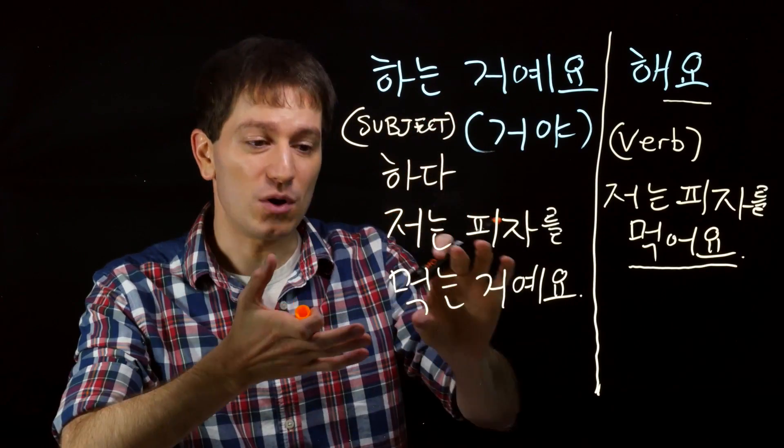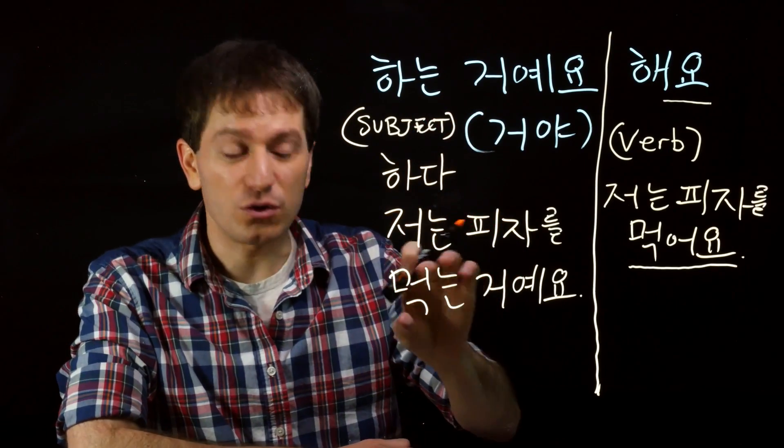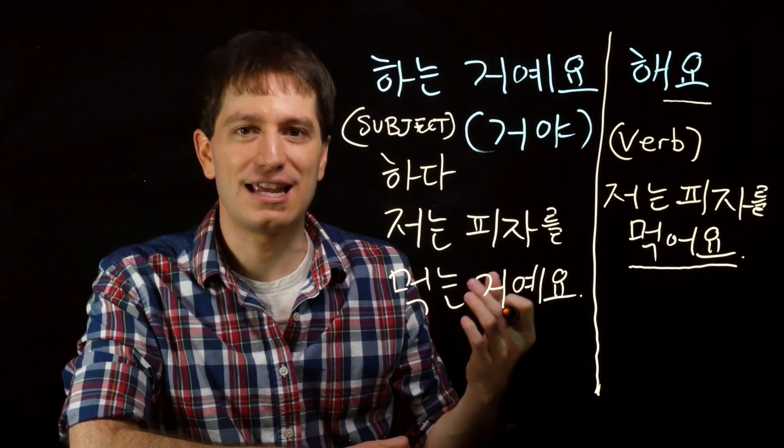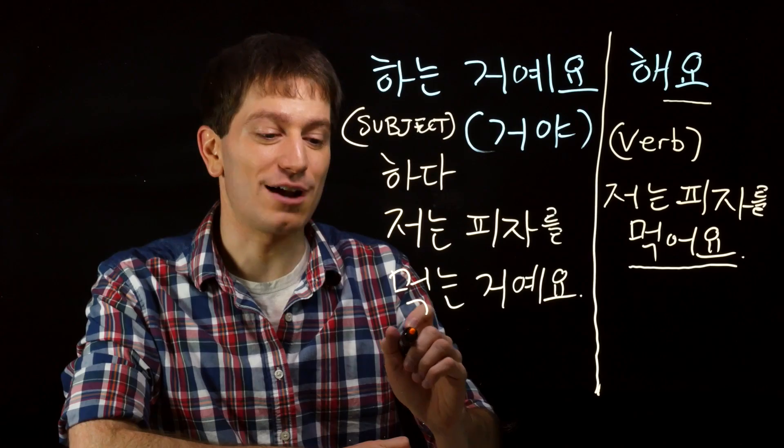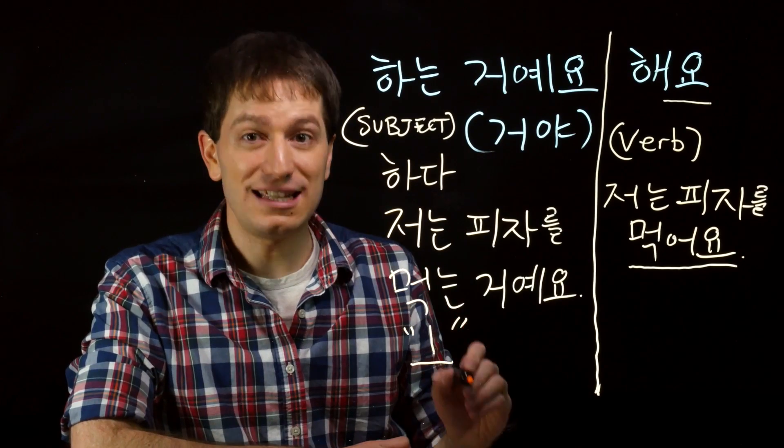In this case, it's 먹다, to eat. So whoever or whatever is the subject of this verb, in that case, whoever it is that's eating it, which is me. So this sentence would sound more like, I eat the pizza.